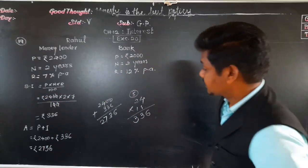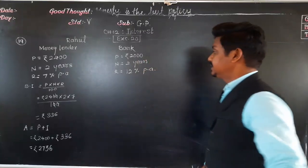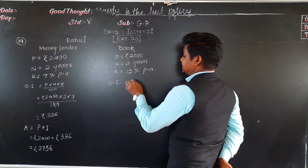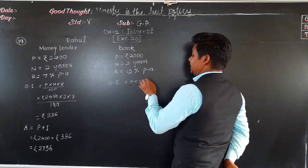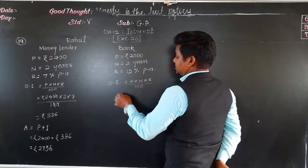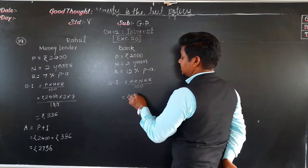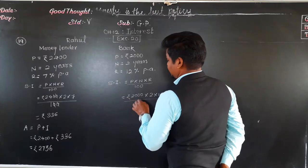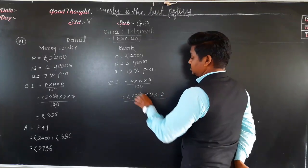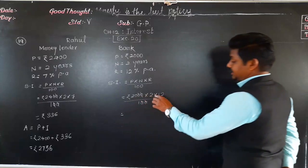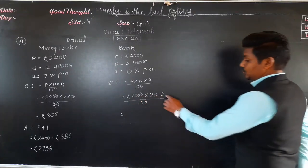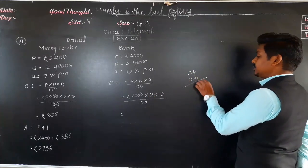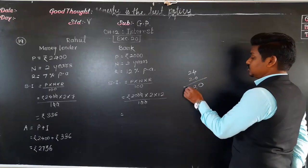Now let us find the amount in the second case — the bank loan. Simple interest equals P into N into R upon 100 = 2000 into 2 into 12 upon 100. Cancelling two zeros: 20 into 2 into 12 = 20 into 24. Zero comes down, two fours are 8, two twos are 4 — giving interest of rupees 480.